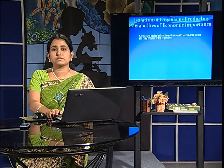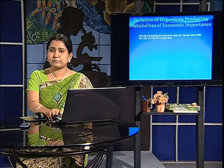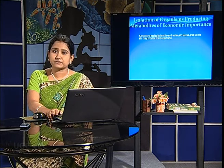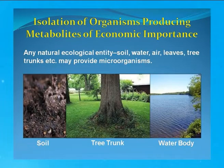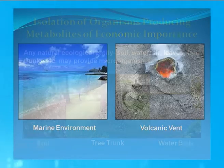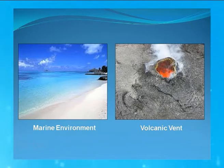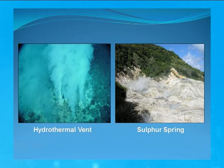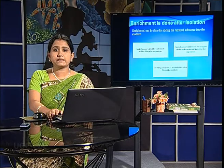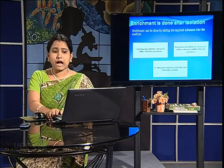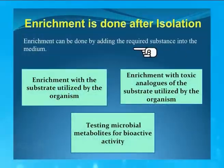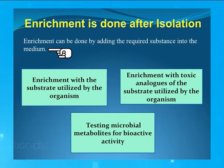Next we come to the sources from where microbes can be isolated. Microbes can be isolated from any natural entities — that is, soil or any water body, tree leaves or tree trunk, marine environment or a volcanic vent, or other extreme environments such as a hydrothermal vent present at the seabed or a sulphur spring. After isolation of microbes, enrichment should be done. Enrichment is a process of adding a required substance into the medium which favours the growth of a specific type of microbe.